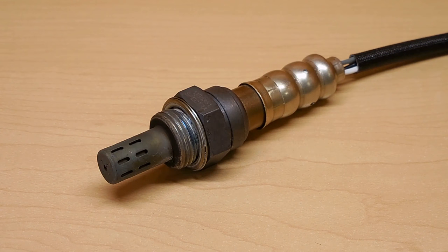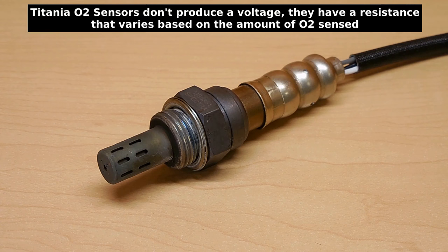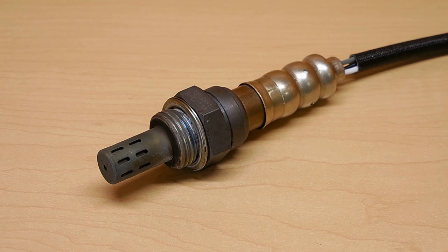When that temperature has been reached, the sensor output wire is going to produce a very low voltage between 0 and 1 volts, but normally it's going to be around 0.1 to 0.9 volts. The computer is going to use that reading to adjust the fuel-air mixture of the vehicle.